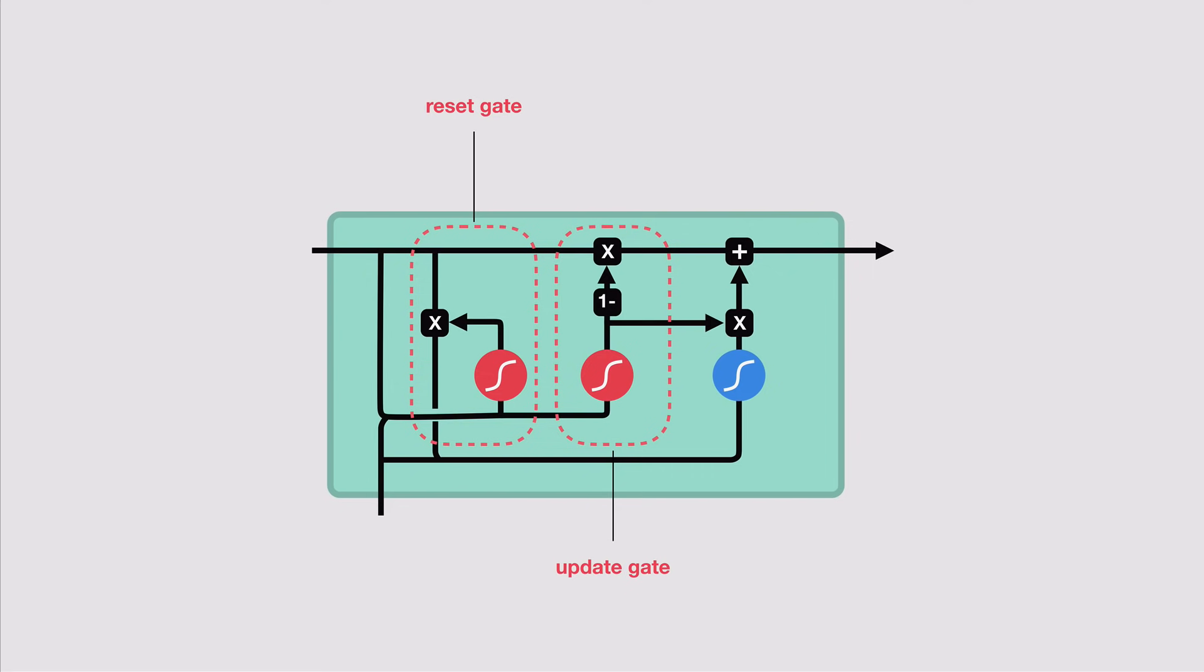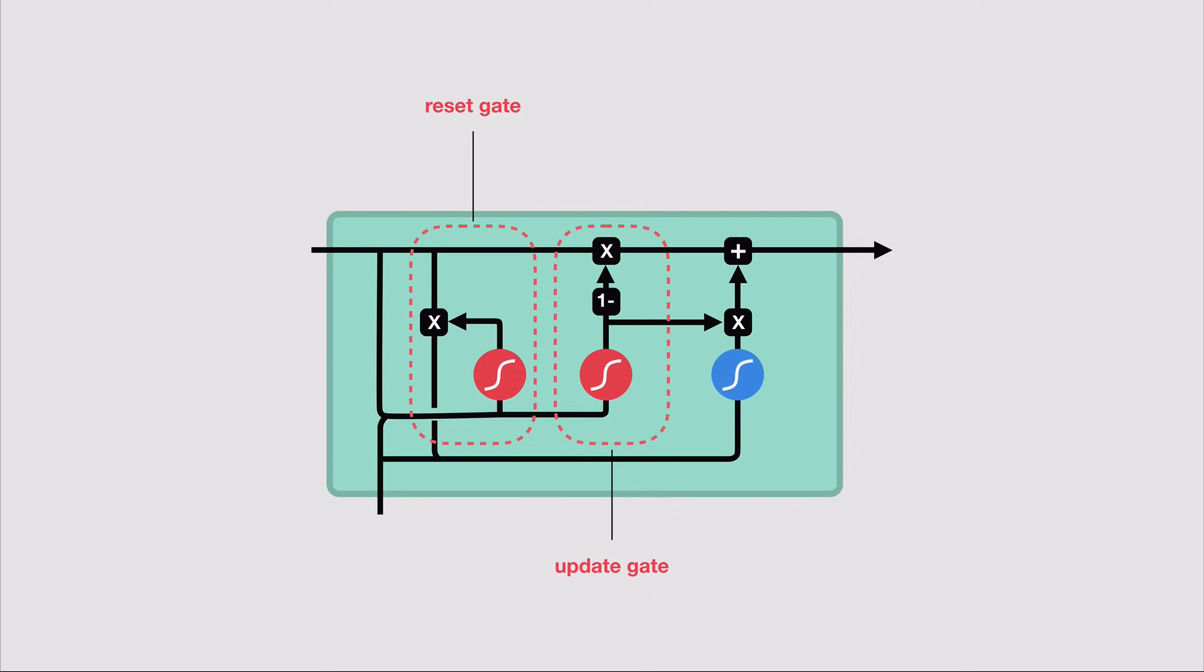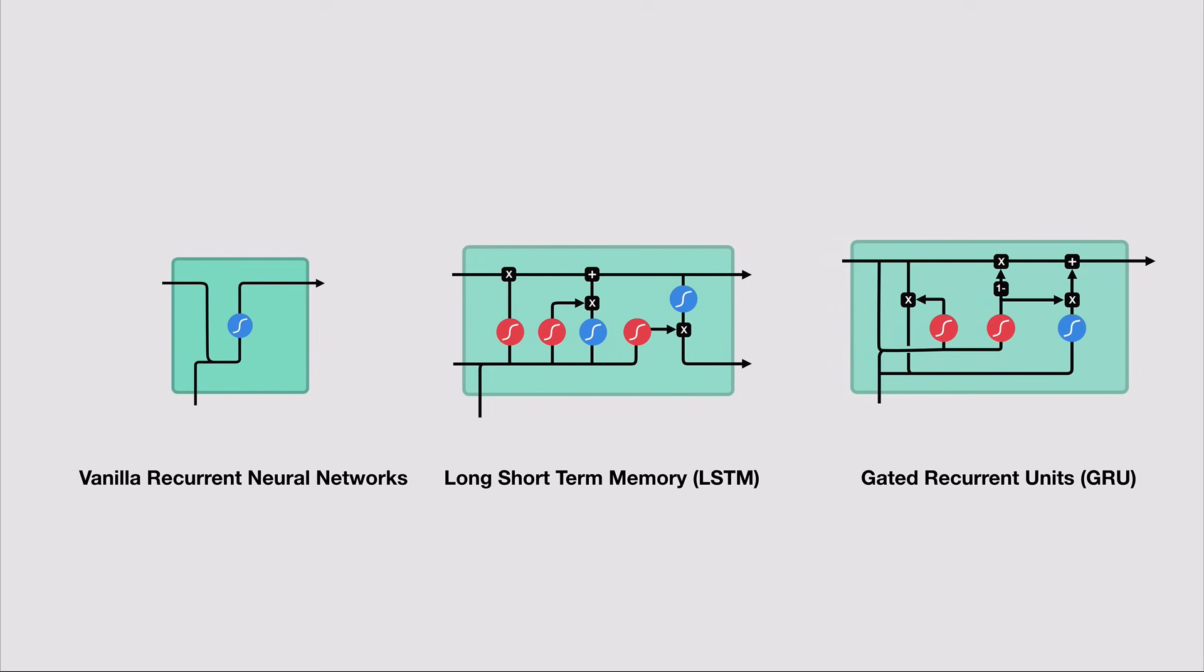So that's the GRU. GRUs have less tensor operations therefore they are a little speedier to train than LSTMs. Researchers and engineers usually try both to determine which one works better for their use case. To sum this up, RNNs are good for processing sequence data for predictions but suffer from short-term memory. LSTMs and GRUs were created as a method to mitigate short-term memory using a mechanism called gates. Gates are just neural networks that regulate the flow of information being passed from one time step to the next.